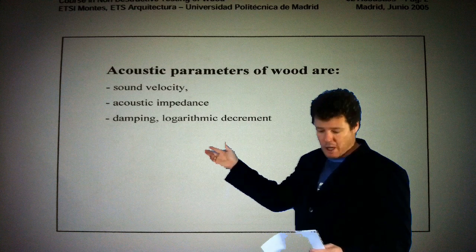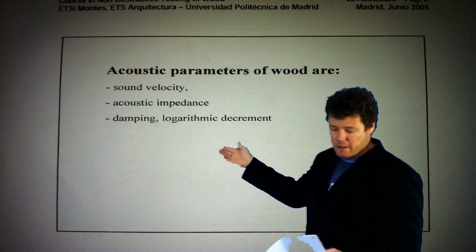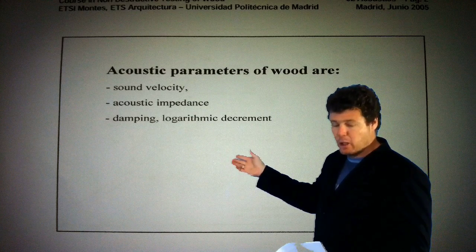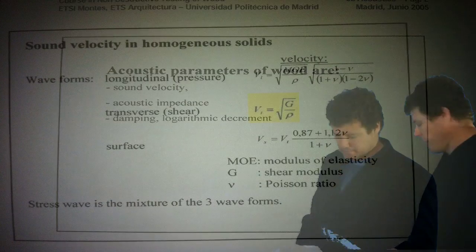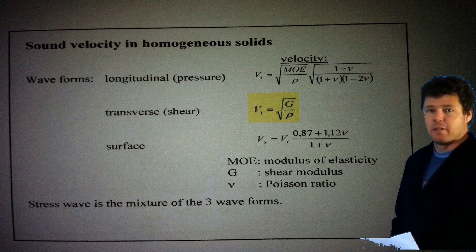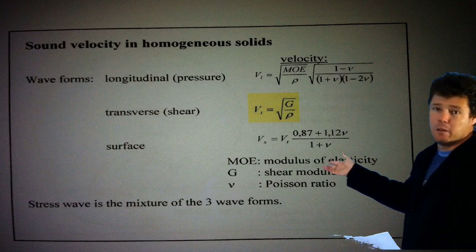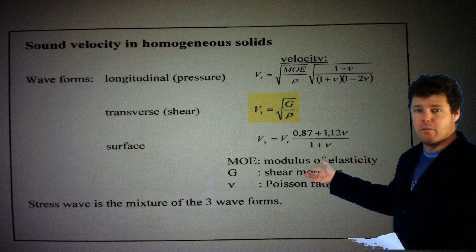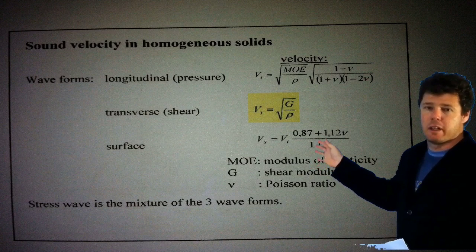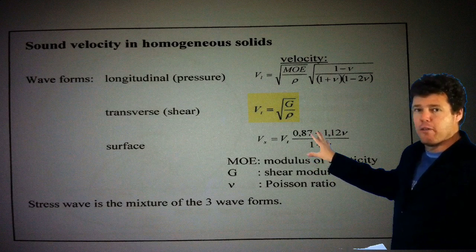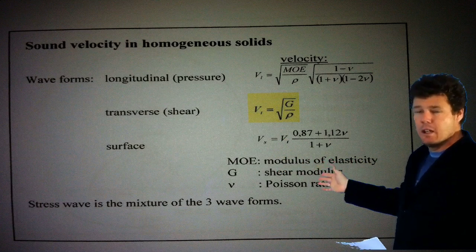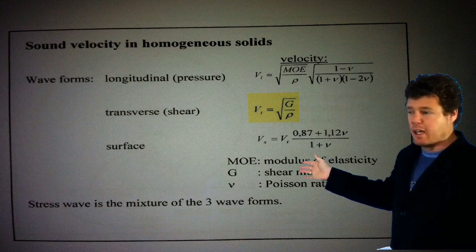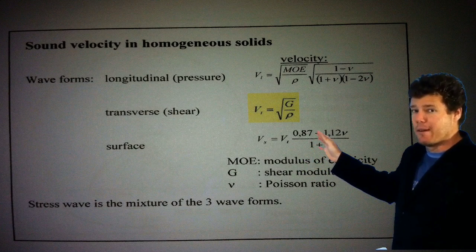The acoustic parameters of wood are sound velocity, acoustic impedance, damping and logarithmic decrement. This is where things get really interesting — this is the real mathematics behind the acoustics of wood and possibly the acoustics of an electric guitar. Hopefully I can follow this up and we'll see whether any of this is applicable to an electric guitar in an experiment shortly after this presentation.